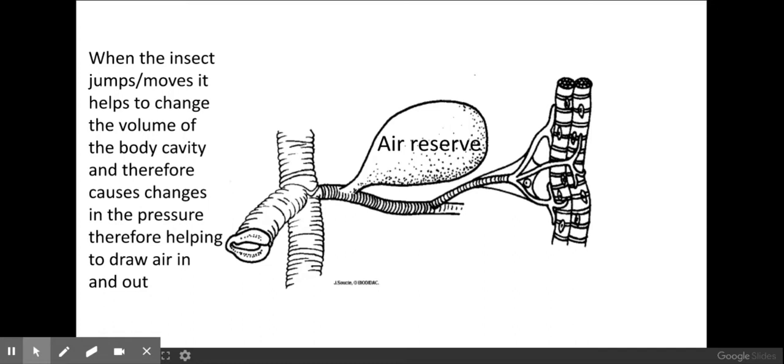Also, I have seen in some insects that they have an air reserve, which I've never seen on an exam question, but you do need to be aware that it could be present within an organism. And as it sounds, it is an air reserve. It's where air can be stored in case the organism needs to close its spiracles because it's maybe a hot day and it doesn't want to lose too much water through those spiracles.